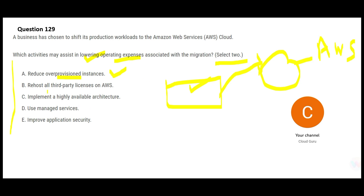Option B says rehost all third-party licenses on AWS. Rehosting the licenses will not help you — you will ultimately be using the same licenses that were provisioned earlier, just now placed on EC2 instances. So B will not reduce operating expenses and is wrong.